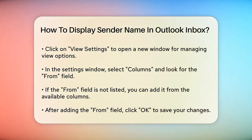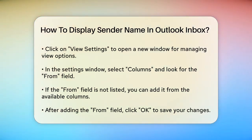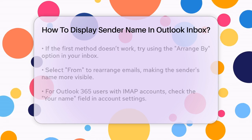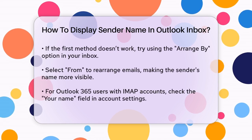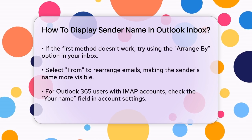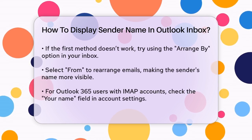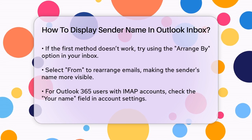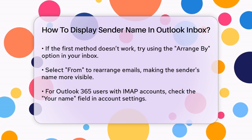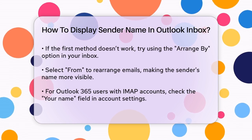If this method doesn't work for you, there's another approach you can take. Go to the Arrange By option in your Inbox and select From. This will rearrange your emails so that the sender's name appears prominently.